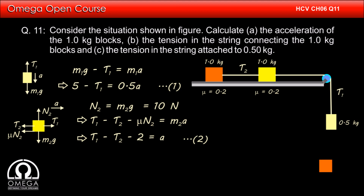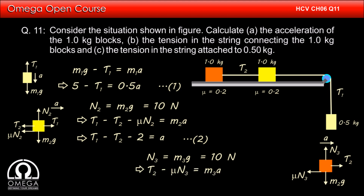Finally, let us draw the free body diagram of the third block. If we denote its mass by m3, gravitational force m3g pulls it downward, normal reaction N3 pushes it upward, tension T2 pulls it towards right, and friction μN3 acts towards left. The block moves right with acceleration a. Balancing vertical forces: N3 = m3g = 10 N. For horizontal motion: T2 minus μN3 = m3a, giving T2 minus 2 = a. (Equation 3)